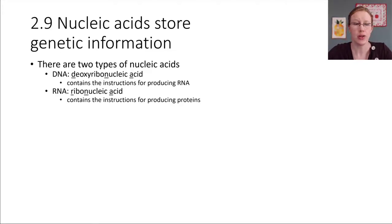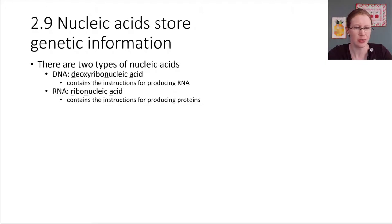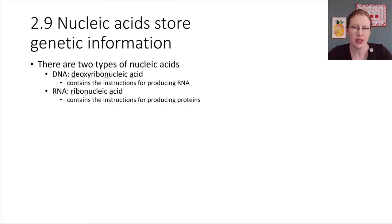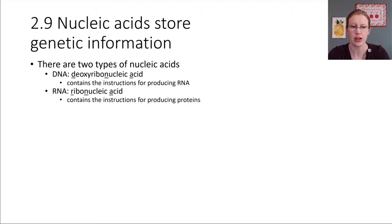Our last type of organic molecule in biology is the nucleic acids. Nucleic acids do a very important job — they are the way that we can store information and pass it on from one generation to the next. There are two major types. DNA, short for deoxyribonucleic acid, stores all of our genetic information and encodes the instructions for making RNA.